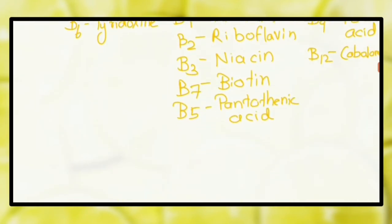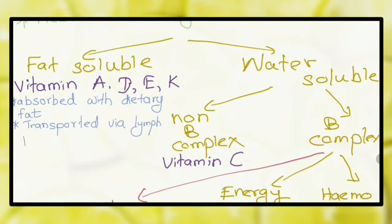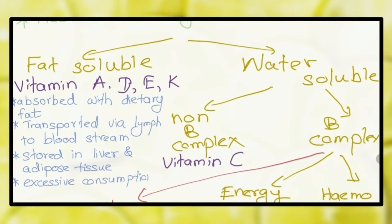What do you know about fat-soluble vitamins? Fat-soluble vitamins are vitamin A, vitamin D, vitamin E, and vitamin K. They are absorbed with dietary fat and transported via lymph to the bloodstream. They are stored in liver and adipose tissue, so in excessive consumption, they can accumulate in the body which may give rise to toxic effects.